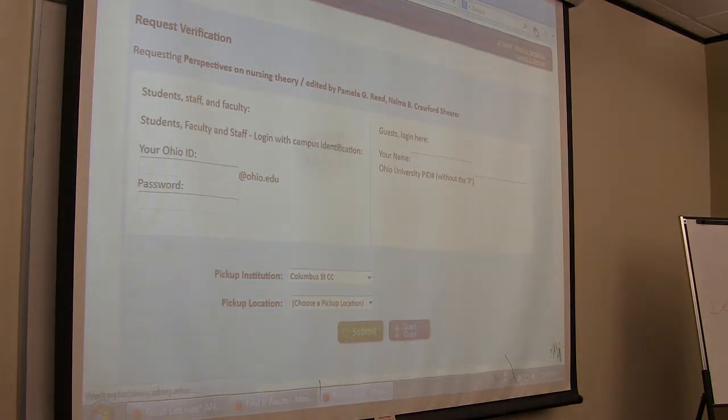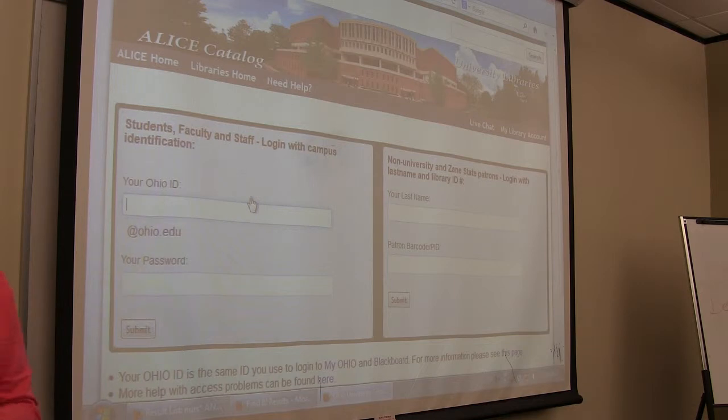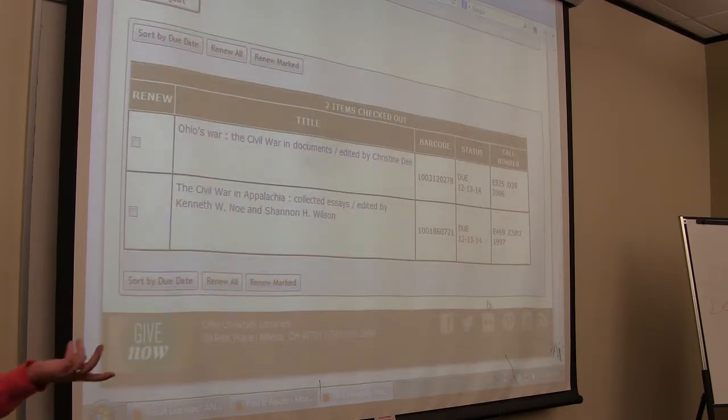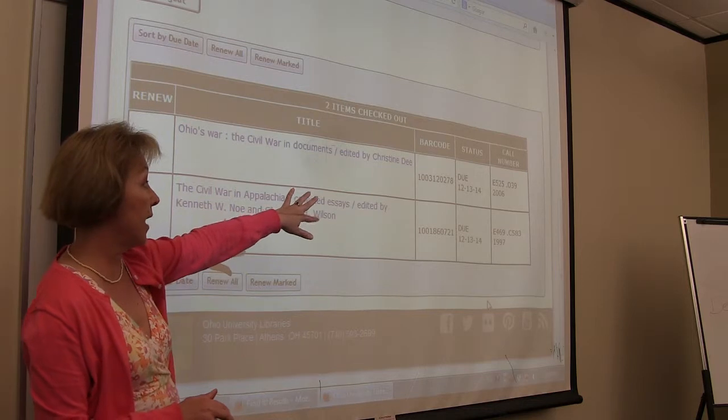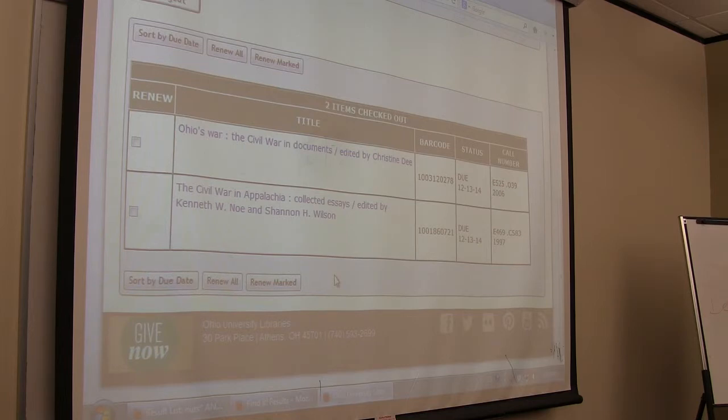And then after that happens, you'll get an email from circulation to tell you that it is available to pick up. You can renew your account or your books from your my library account. You can also look at this and see where it is in transit. If it's ready to be picked up, it'll be in the status or it'll say it's in transit. You can renew here. All you have to do is click on the renew boxes and you don't even have to bring the book in. You can do that all online.